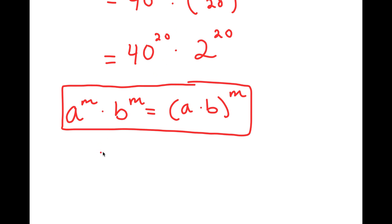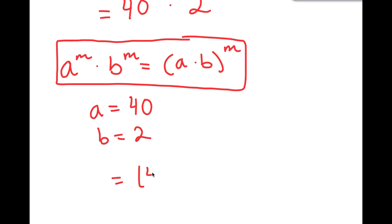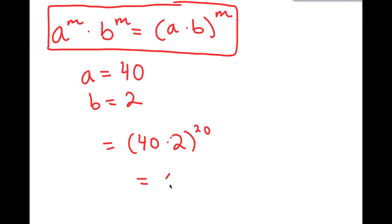So in this case, a is 40 and b is 2. So this is going into 40 times 2 to the power of 20, which is equal to 80 to the power of 20. So this is my answer to this problem.